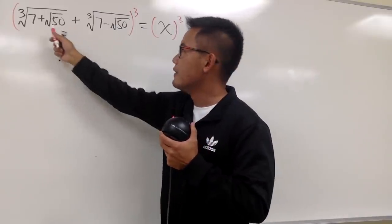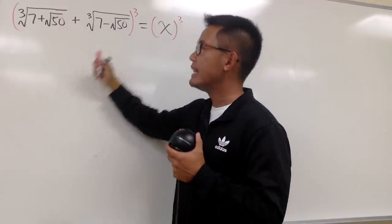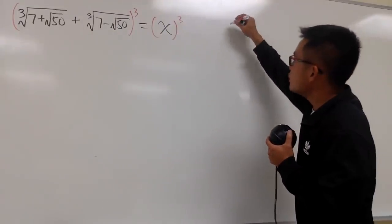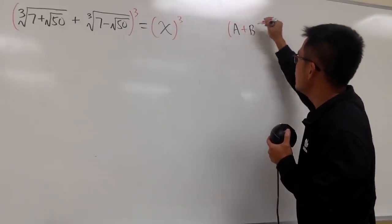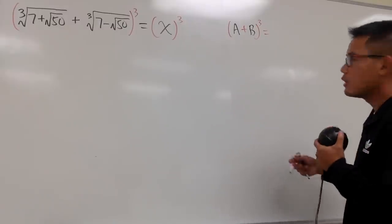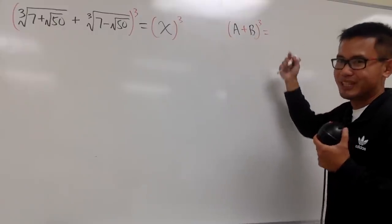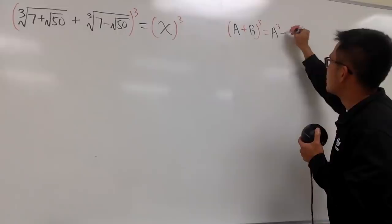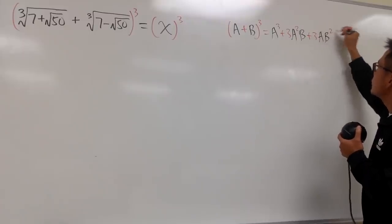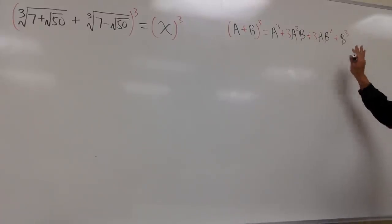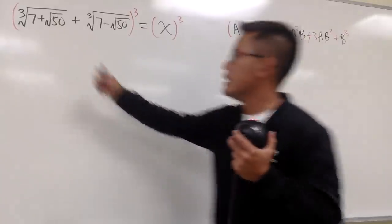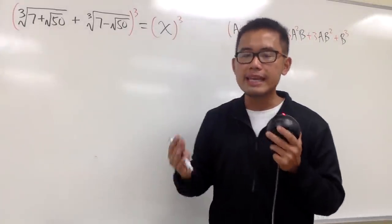Look at the left-hand side. We have a plus b as a binomial raised to the third power. This is a formula we can use. When we have (a + b) to the third power — you can use Pascal's triangle or the binomial theorem, or multiply it out three times — this equals a³ + 3a²b + 3ab² + b³. That's 1-3-3-1, one of the entries from Pascal's triangle. So this is my a, and that's my b.